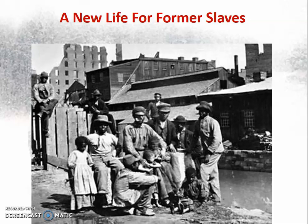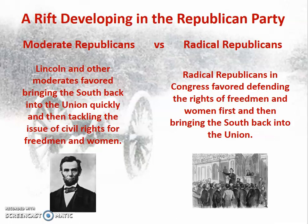Beyond the physical, economic, and social turmoil generated in the South by the Civil War, we're also going to see a political storm brewing in our nation's capital at the end of the conflict. At the center of this political storm will be no less than Commander-in-Chief Abraham Lincoln. Even before the end of hostilities, a rift developed within the Republican Party. There were moderate Republicans, of which President Lincoln was one, and radical Republicans, who tended to dominate both houses of Congress. Both factions shared the same general priorities — it was just the order in which they wanted to approach them that they disagreed on.